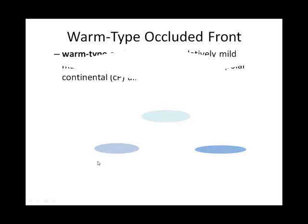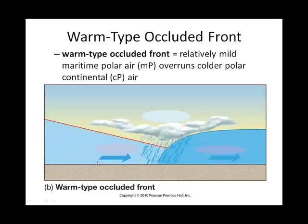There is also a warm type of occluded front, where cool air catches up ultimately with colder air, again lifting a sector — a third air mass — aloft. The key thing to recognize is that an occluded front involves three air masses.